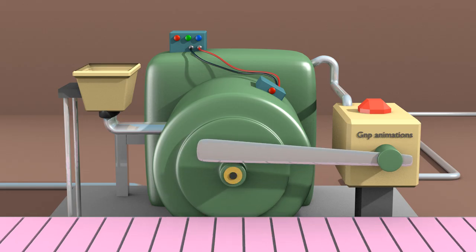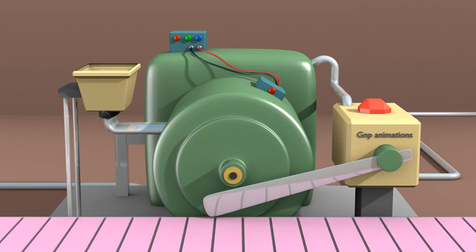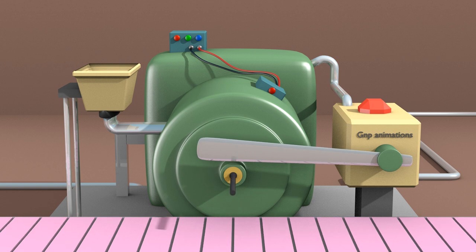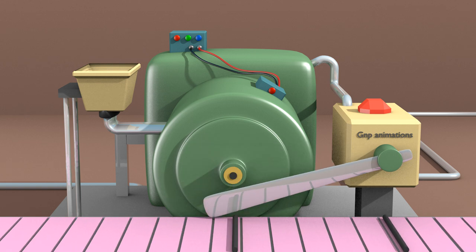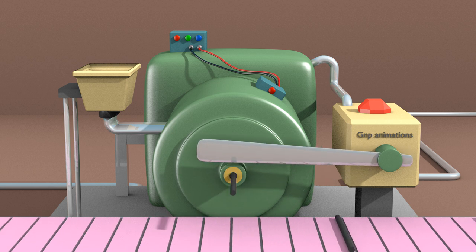Then the graphite and clay mixture is sent into a hydraulic press in which the mixture is forced through a die opening of the proper size. That produces one long continuous lead. Then the next machine cuts the continuous lead into pencil lengths.